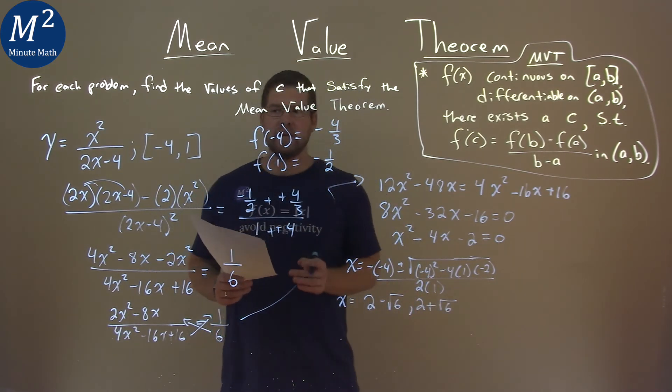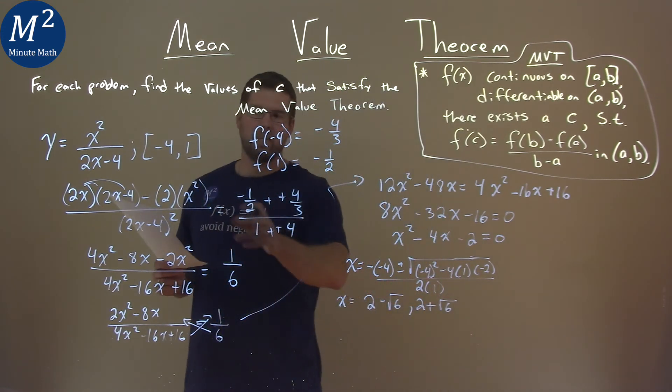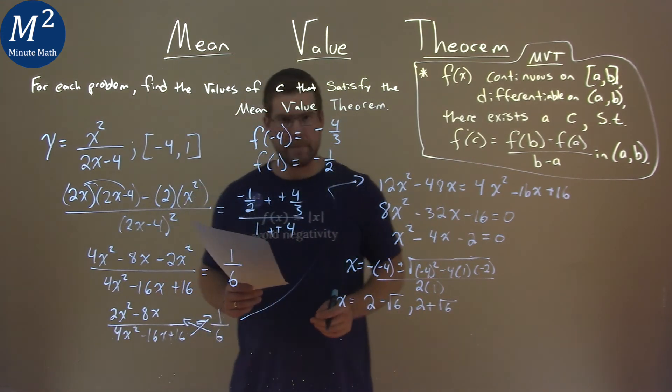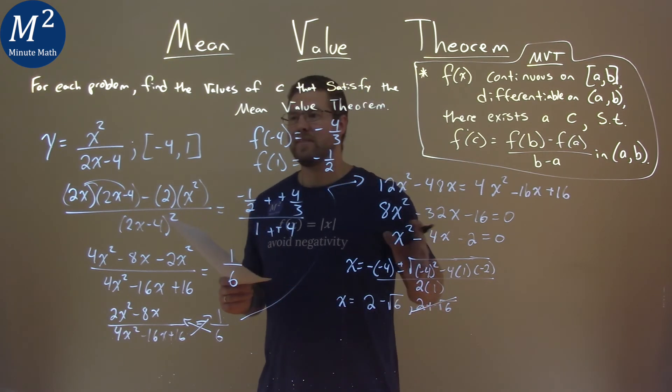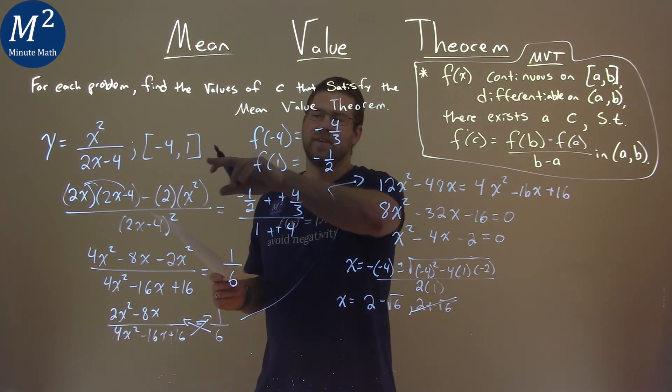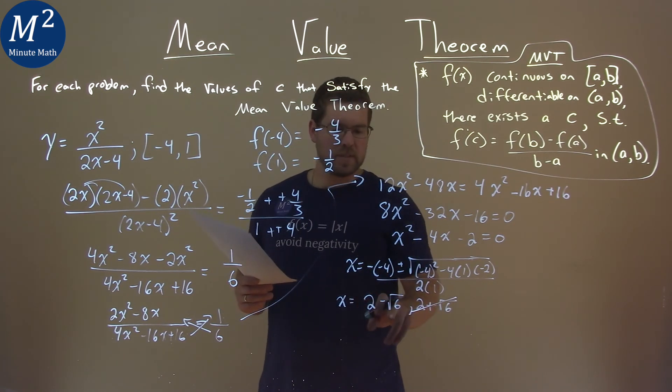And so, only one of these is actually in our domain, from negative 4 to 1, our interval there. And that is 2 minus the square root of 6. 2 plus the square root of 6 is outside, clearly, it's bigger than 1.